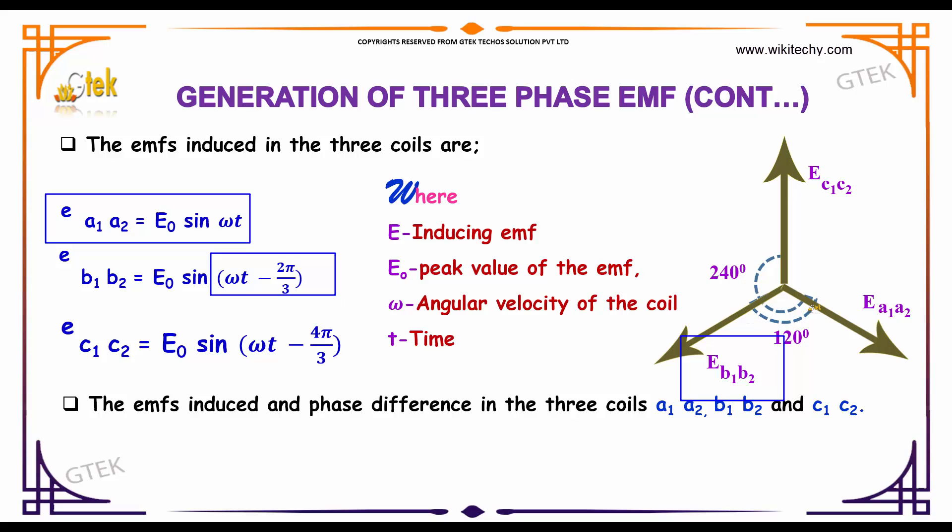Whereas it is of 240 degrees, so ωt minus 4π by 3. So the EMF induced and phase difference in three coils is shown here.